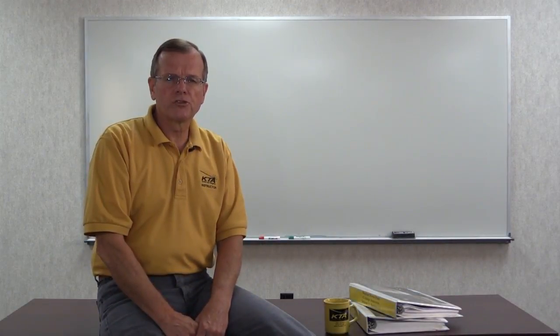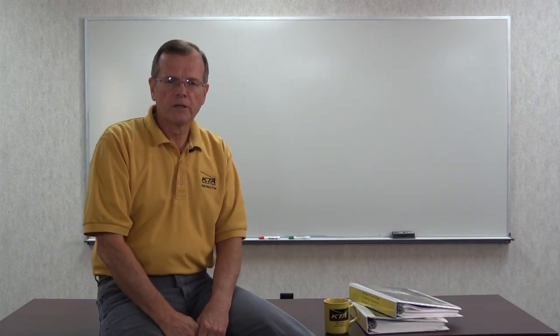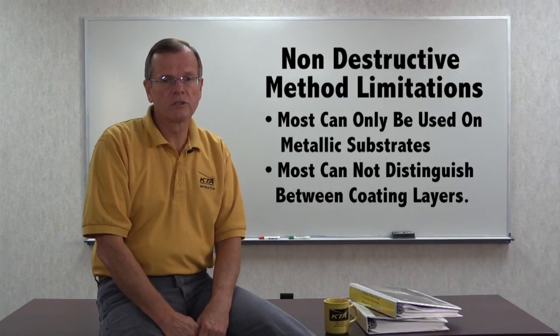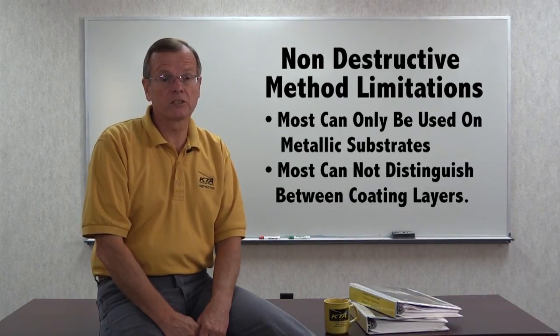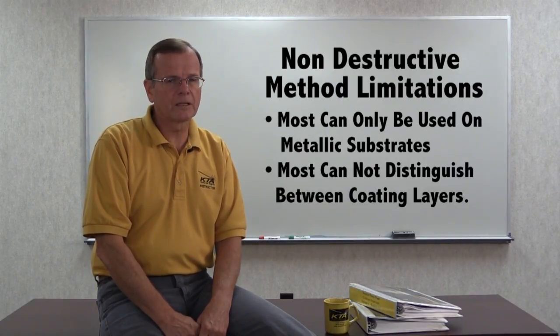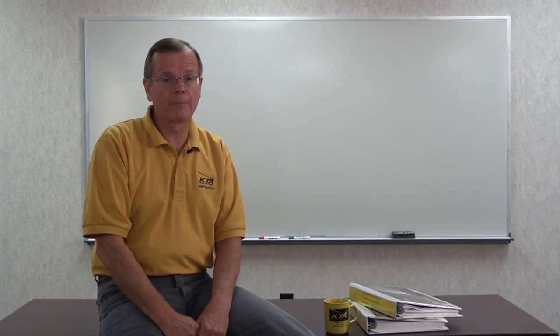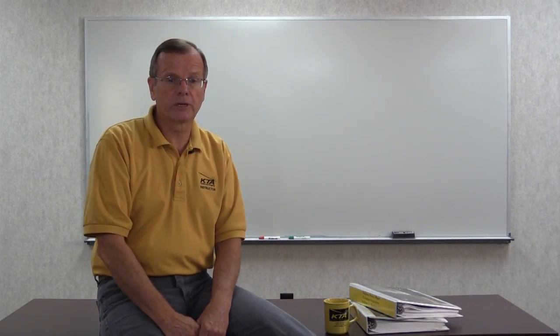Coating thickness is commonly measured using non-destructive gauges. However, those coating thickness gauges have a few significant limitations. They can only be used on metallic substrates, and most can't distinguish the thickness of individual layers after all the coats have been applied. They only measure the gap between the gauge probe and the metal substrate.